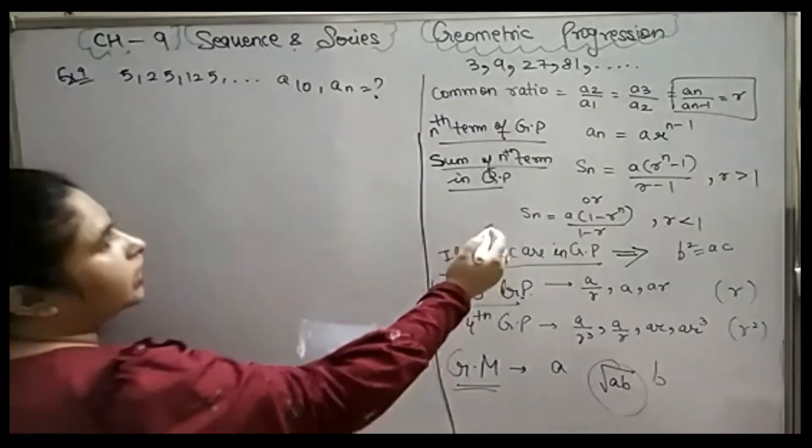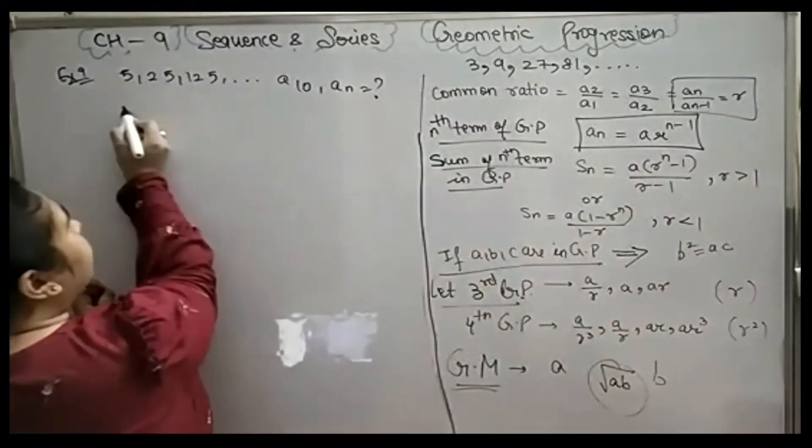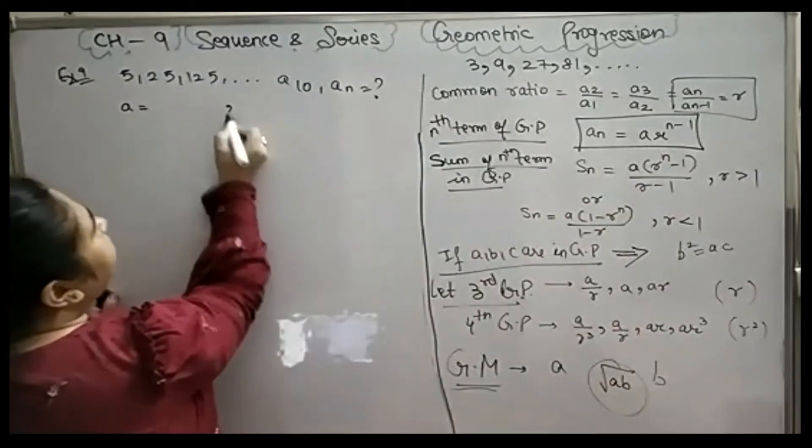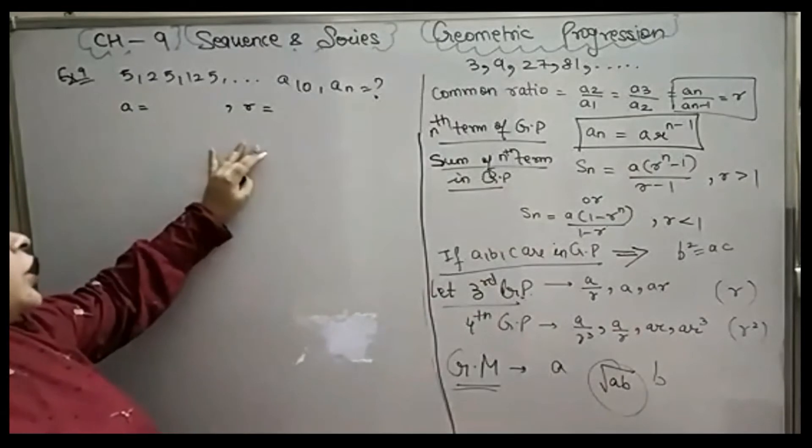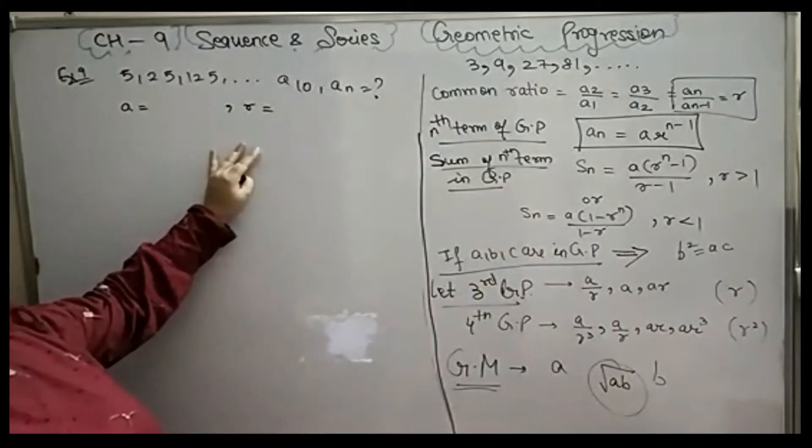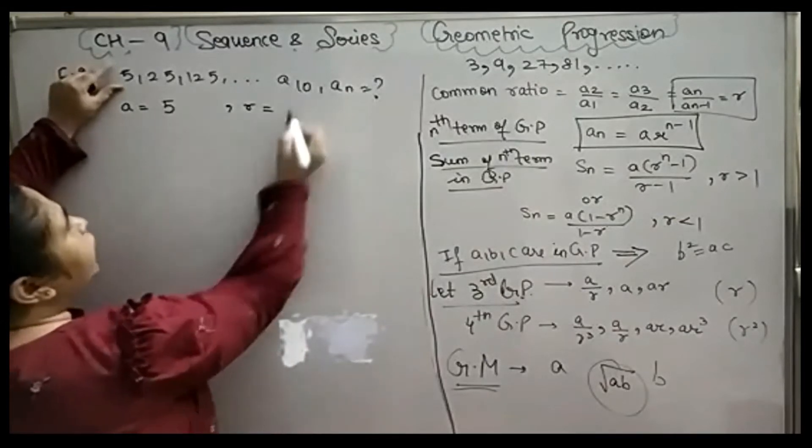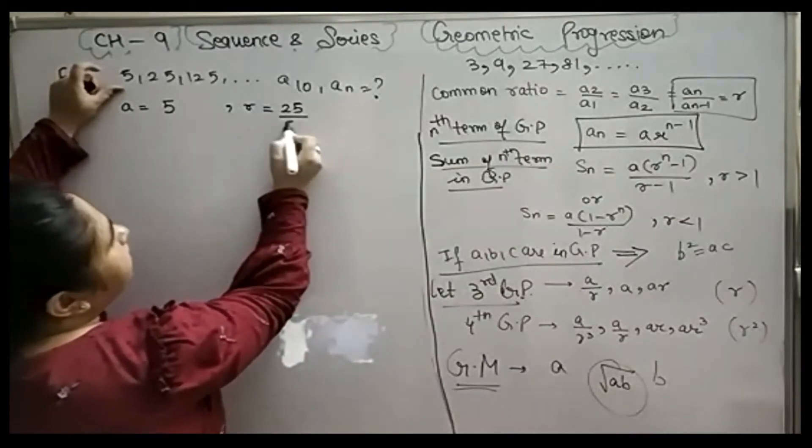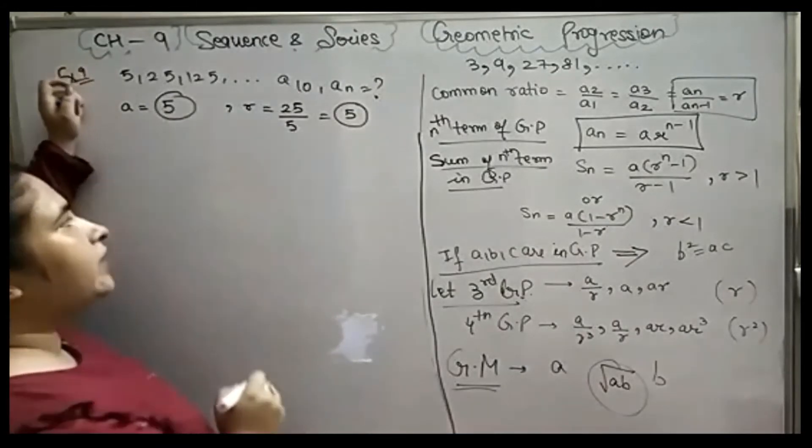The formula is this. What is the first term of this GP and what is the common ratio of this GP? 5 and 5. The first term is 5. The common ratio is the second term divided by first term is 5. So, A is 5 and R is 5.